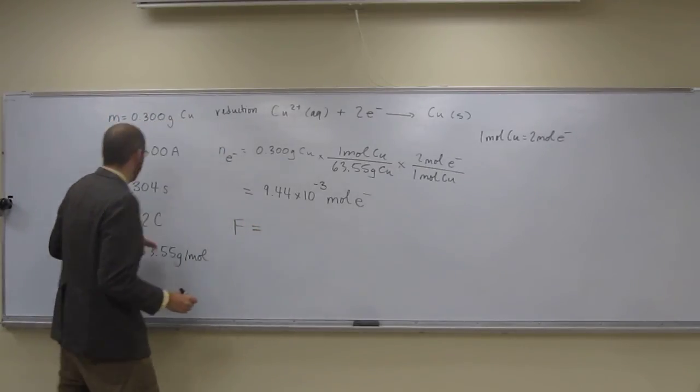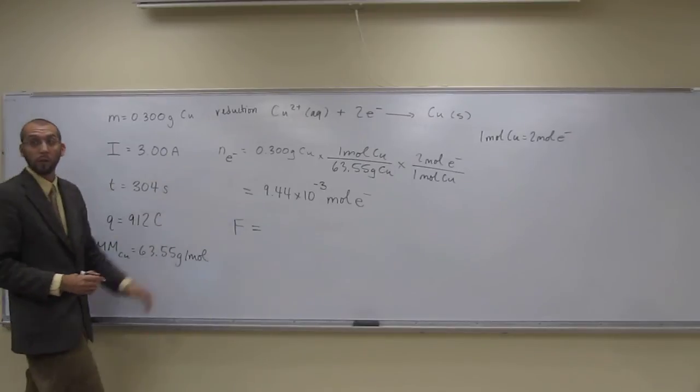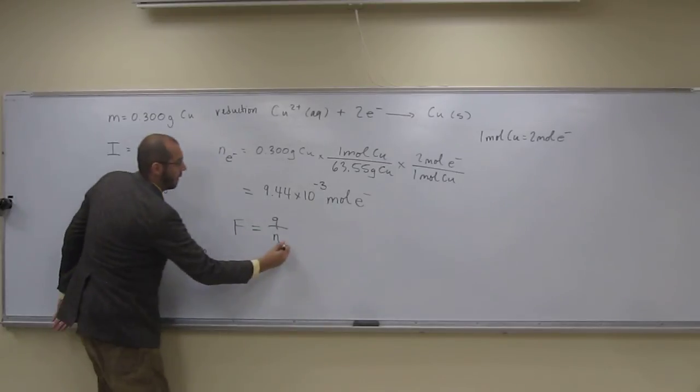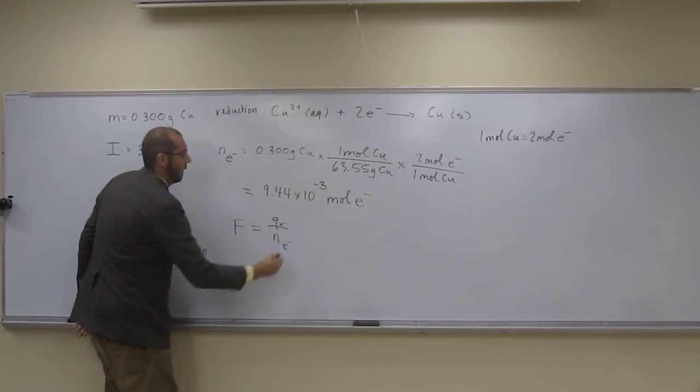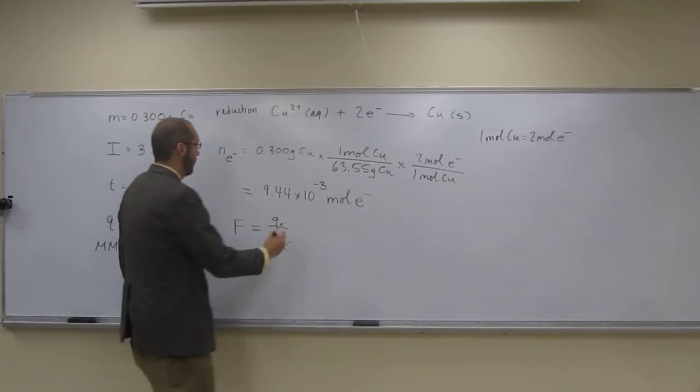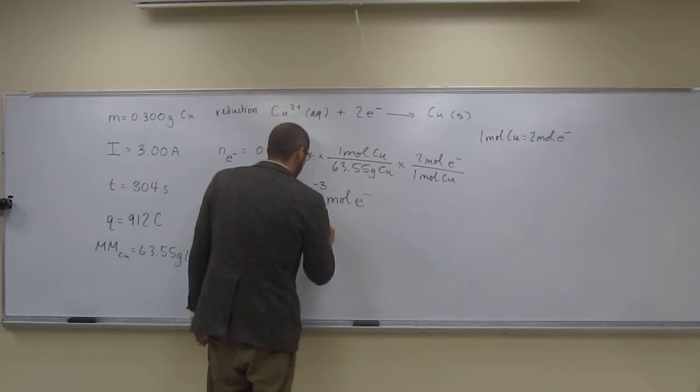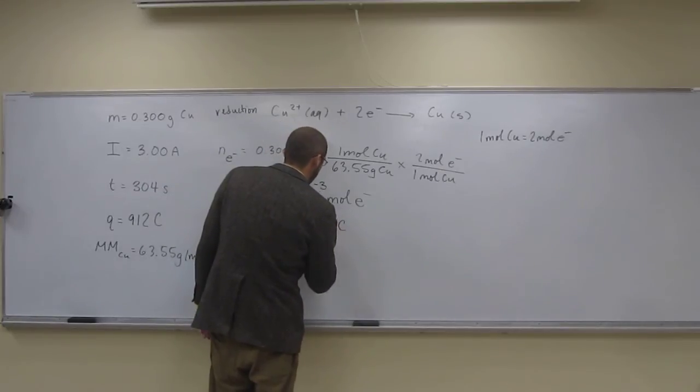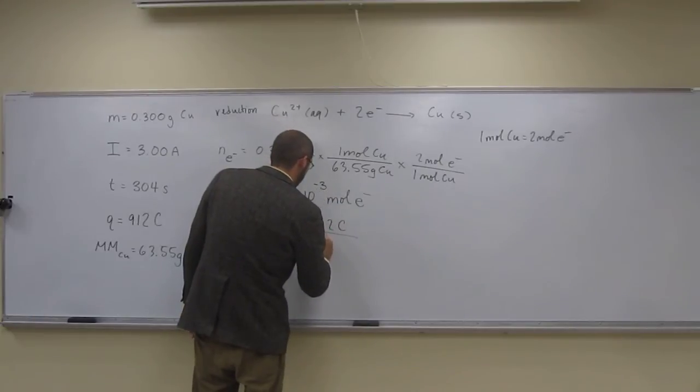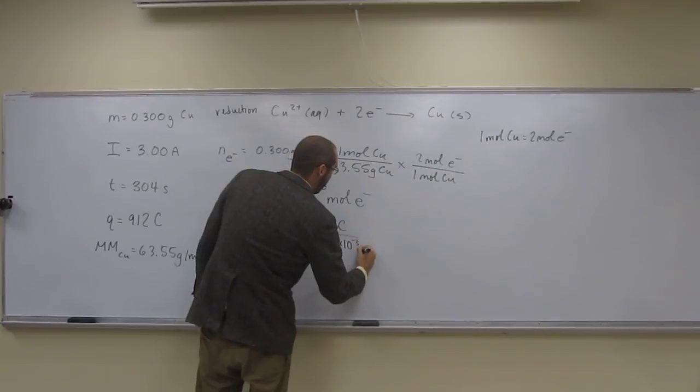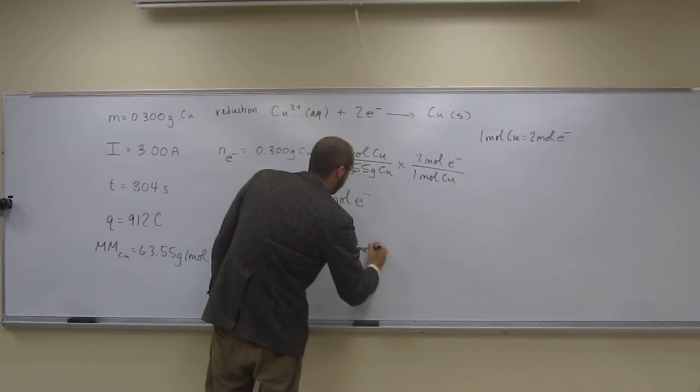So if you want to think of it that way, it's going to be charge per mole. F equals Q per N. Like that. So 912 Coulombs divided by 9.44 times 10 to the negative 3 moles of electrons.